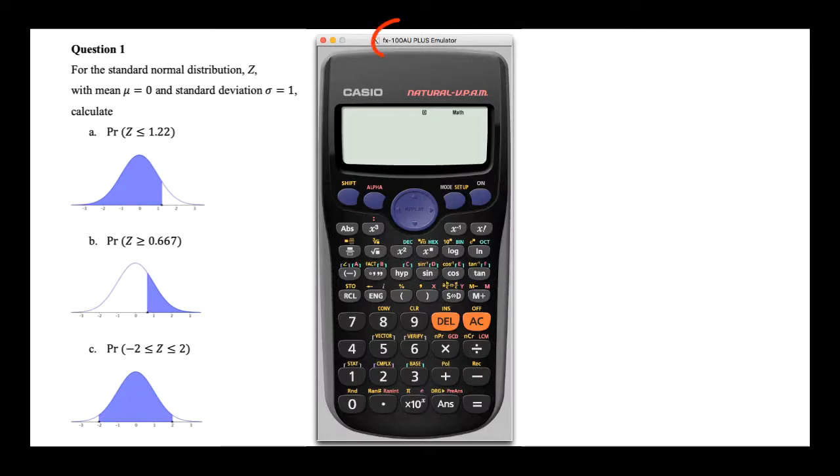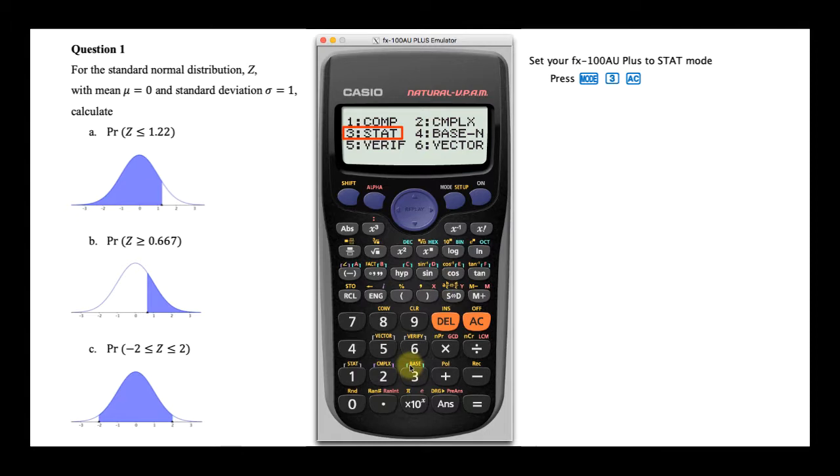Using the Casio FX-100 AU Plus, probabilities associated with the standard normal or z distribution can be calculated. To perform such calculations, first set your FX-100 AU Plus to statistics mode by pressing Mode and then choosing 3 for Stat.